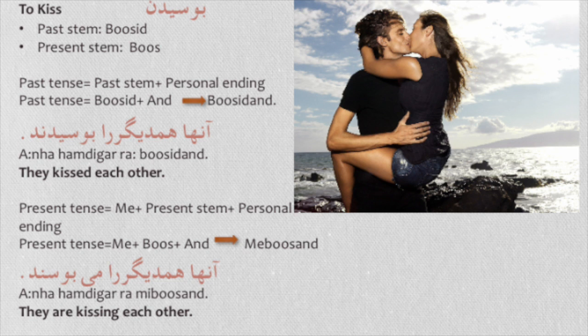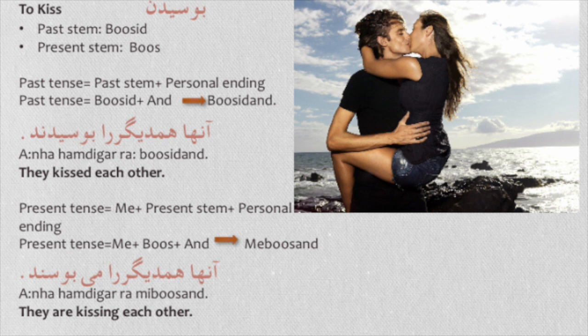The second verb is busidan — to kiss. The past stem is 'busid' and the present stem is 'bus'. For the past tense, we need 'and' as the personal ending for they: 'busidand'. Anha hamdigara busidand — they kissed each other. For the present tense, we need 'me' plus present stem 'bus' plus 'and': mi busand. Anha hamdigara mi busand — they are kissing each other.